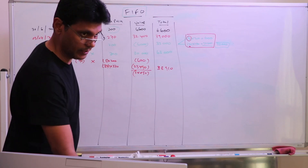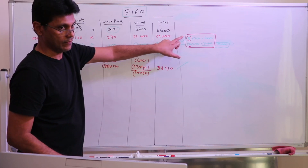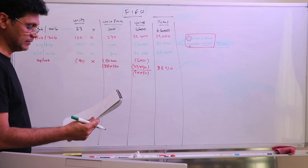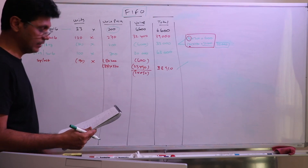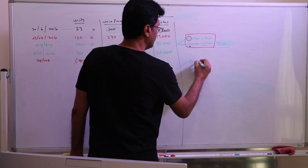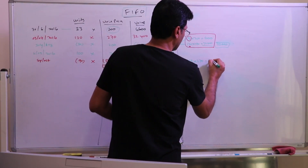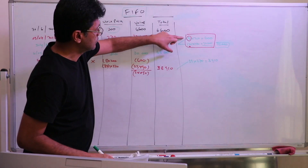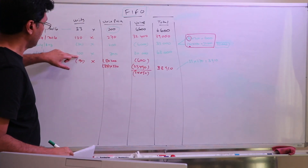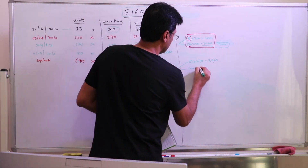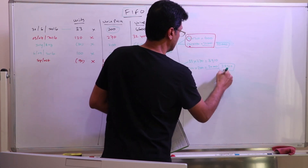We now do a physical breakdown of the $38,910 balance. The 3 units are gone. Out of 120, we sold 87 — so 33 units remain at $270 each, which is 33 times $270 equals $8,910. Plus the 100 units purchased in September at $300 — 100 times $300 equals $30,000. Total: $8,910 plus $30,000 equals $38,910. That matches.